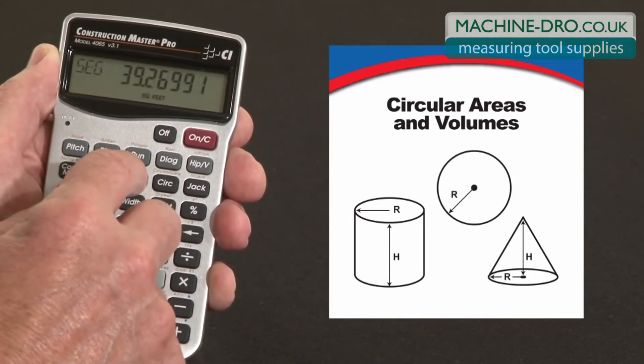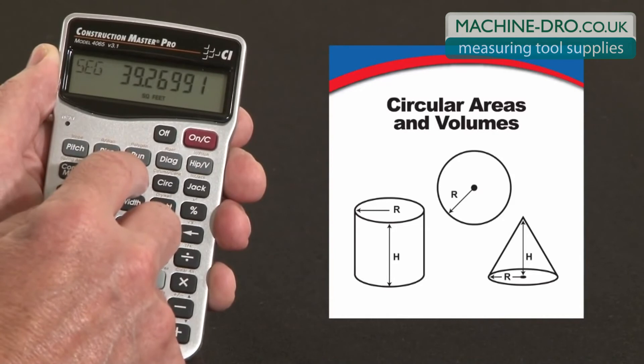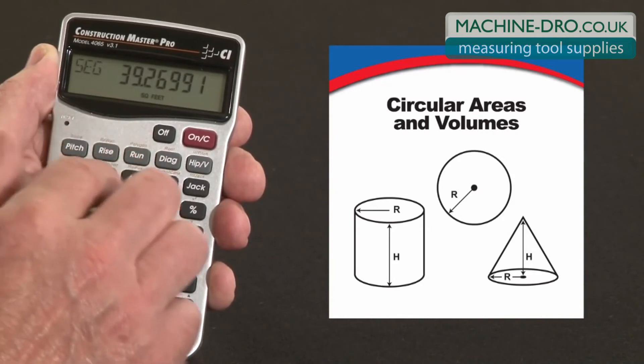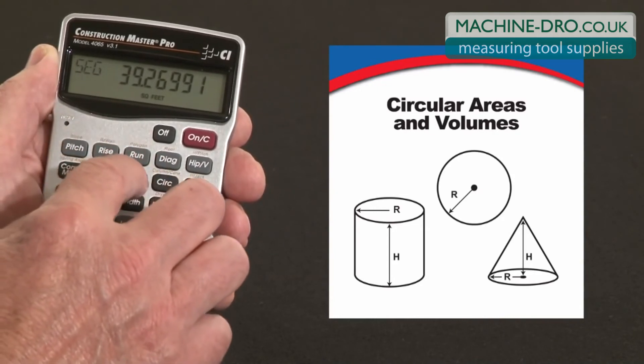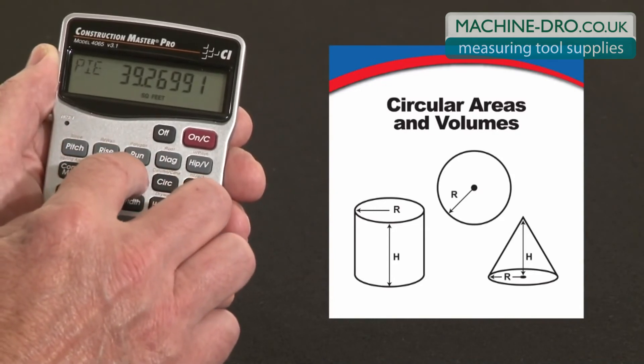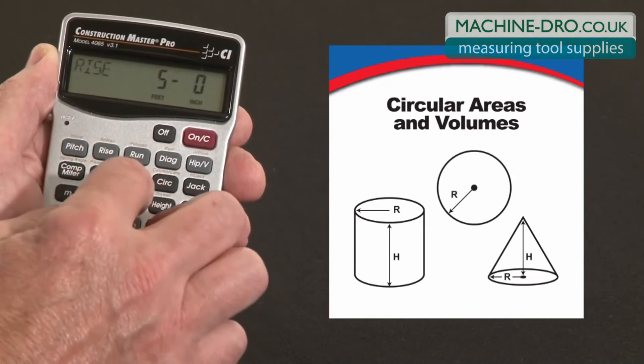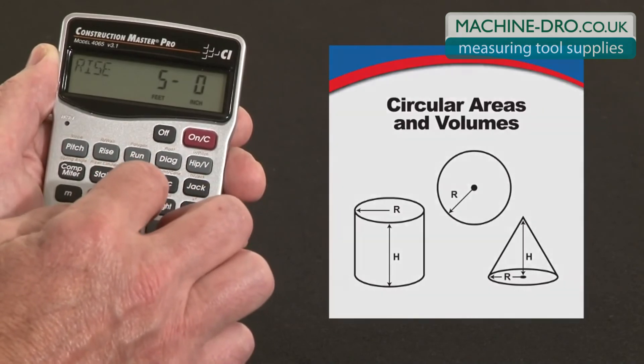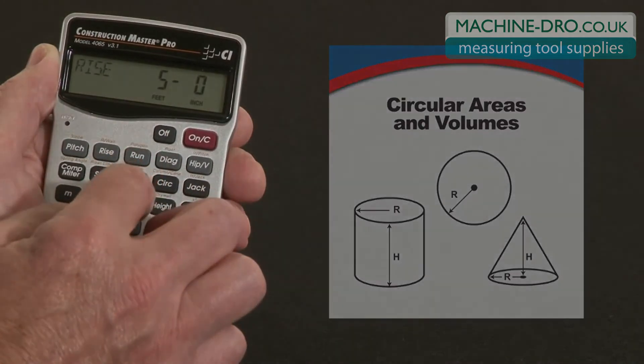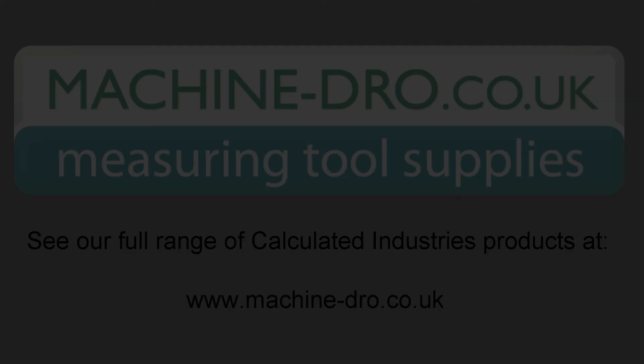Press it again and there's your segment square-foot area, the pie slice, and the total rise from the center — which is essentially the radius.